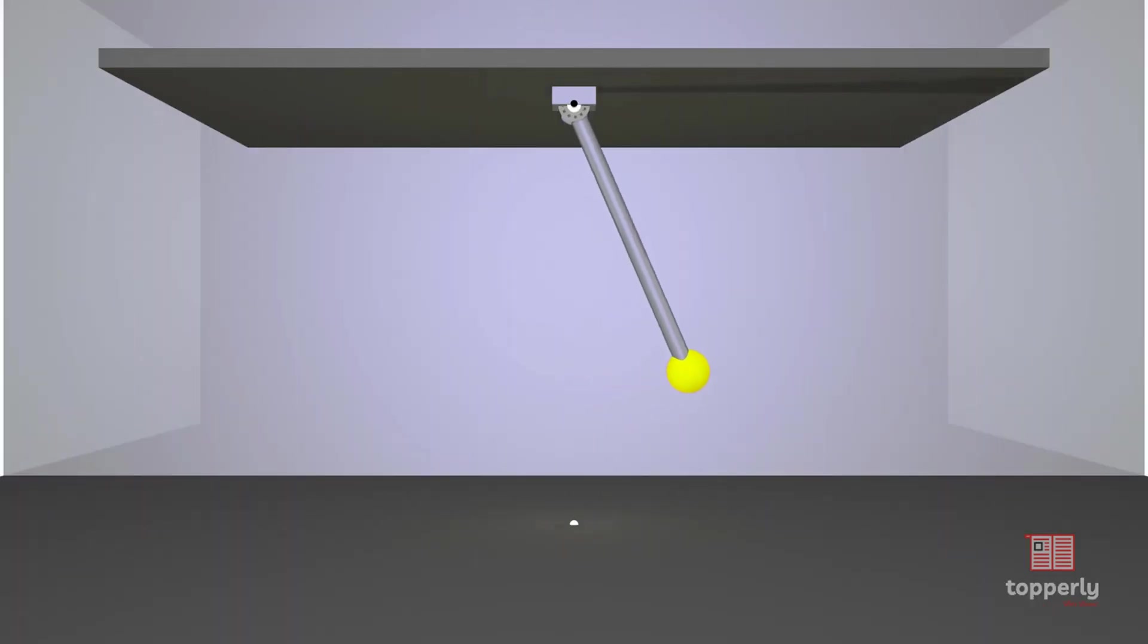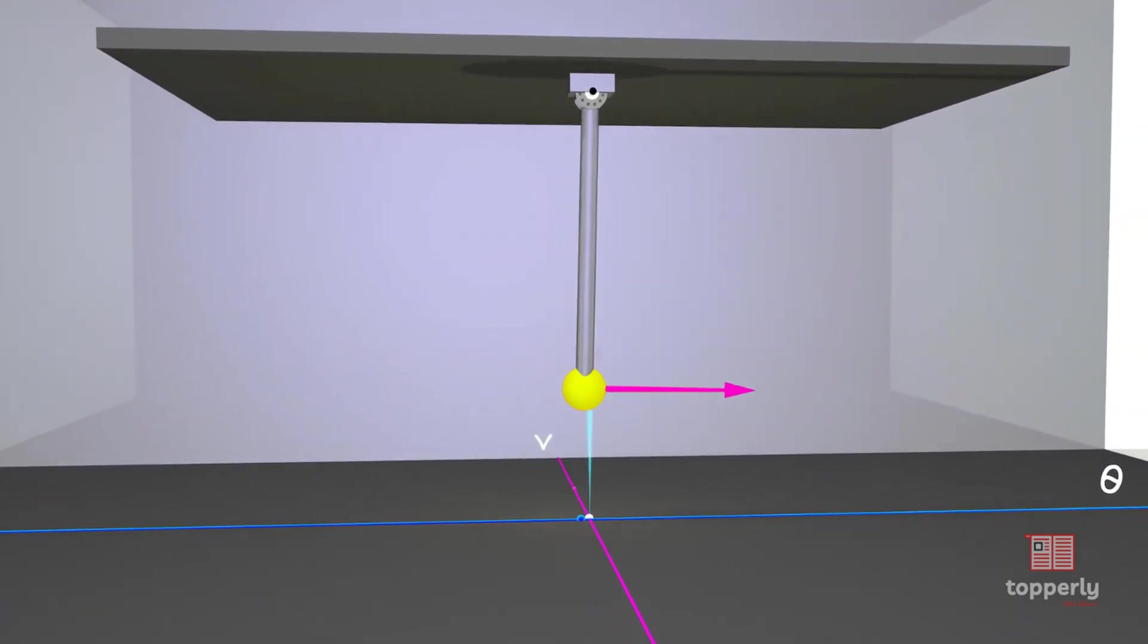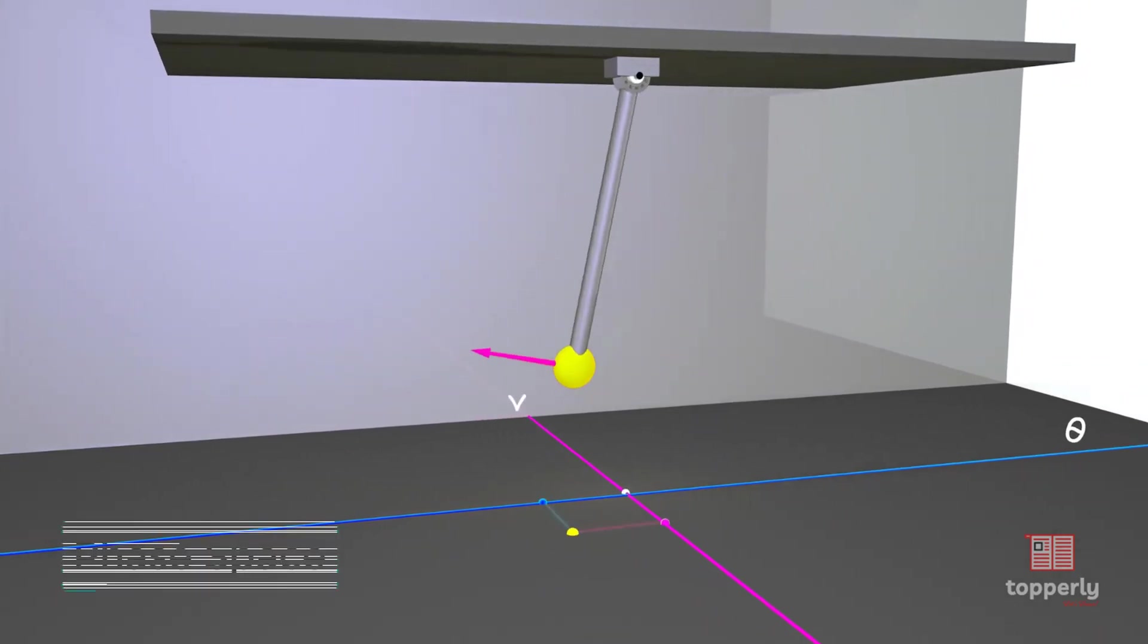As students of engineering, we are all familiar with position-time or velocity-time graphs. Now, let's try to make a 2D plot that represents every possible state of the pendulum. On the x-axis of the graph, we have the angle of the pendulum and on the y-axis, we have its velocity. The resulting graph is called a phase space.